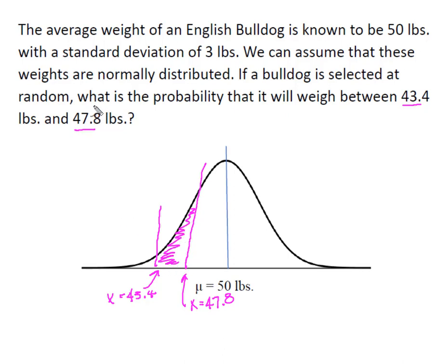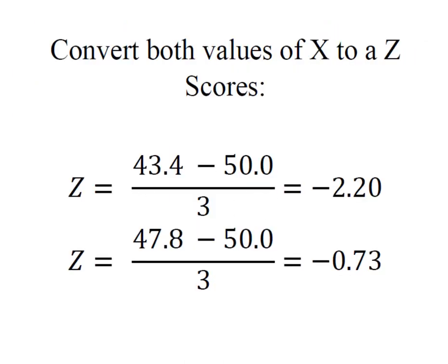We already know that the next thing I'm going to show you is me converting this X and this X to Z scores and then looking them up in normal distribution table. So here I've simply converted both values of X to Z. Remember it's always X minus the mean divided by standard deviation. In this case I have two negative Z scores because both of my values of X fall to the left of the mean. Now I'm going to look up 2.20 and 0.73 in my normal distribution table.